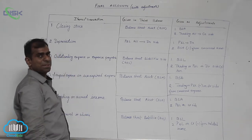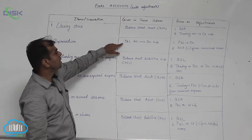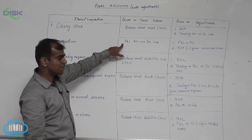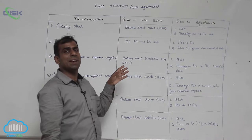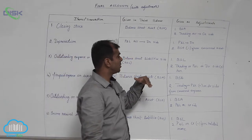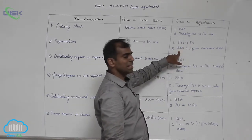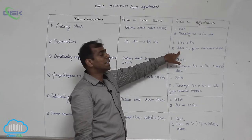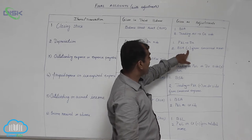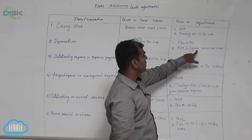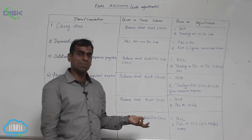Next is depreciation. If depreciation appears in the trial balance, the treatment is to take it as an expense on the P&L account debit side. If depreciation is given as adjustment, you will take it as an expense on the P&L account debit side, and simultaneously deduct it from the concerned asset on the balance sheet asset side — for example, deduct from building or machinery respectively.